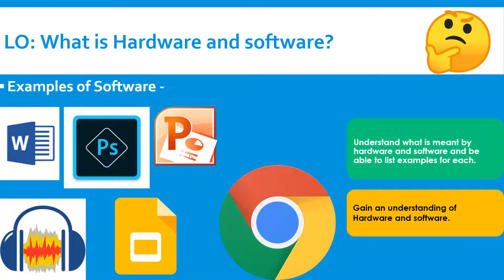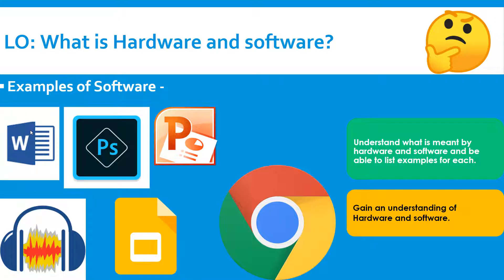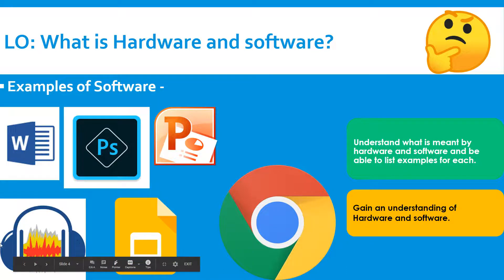Software are programs or applications that are used to create pre-production documents. Examples of software you could use: Word — you might use Word to make your mind map. You might use Photoshop to create the final product. If you're making a poster or DVD cover, you might use Photoshop for that. PowerPoint — you might use PowerPoint when you're creating a mood board or a mind map, or when you're making a design log or creating a final product. Audacity — this is used to record sound; I'm using Audacity now to record my voice for this video.